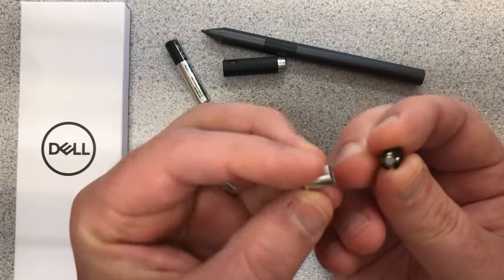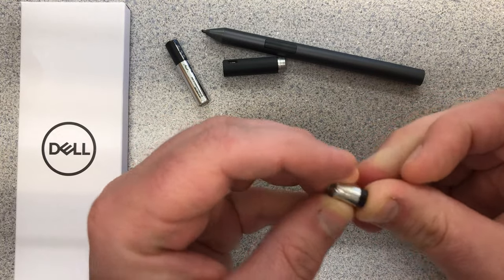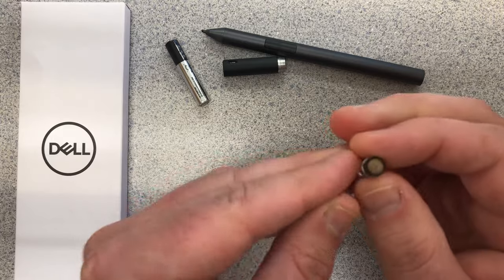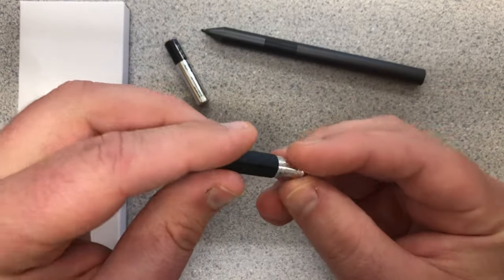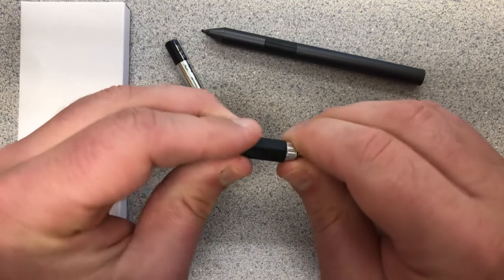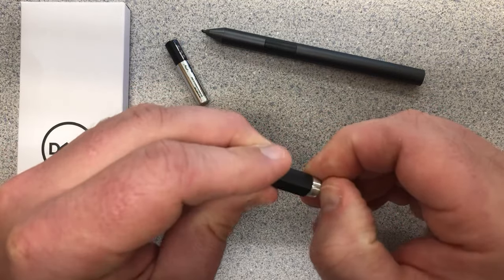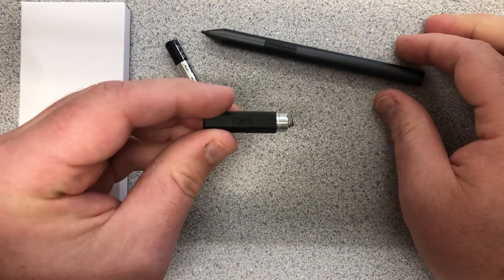I'm going to put the black piece back in the barrel of this little tiny piece just like that, and now I'm going to put the little tiny piece back in the small barrel of the top of the active pen, the active stylus.